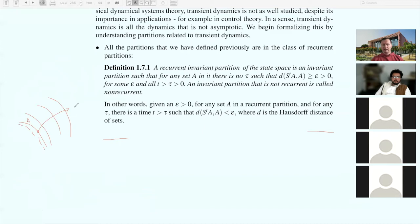On the other hand, the intuitive idea is that a recurrent partition is one in which you start on some set A and return—the image of that set under S_T comes back close within any epsilon you want to the original set. Clearly the periodic partitions satisfy that kind of thing.